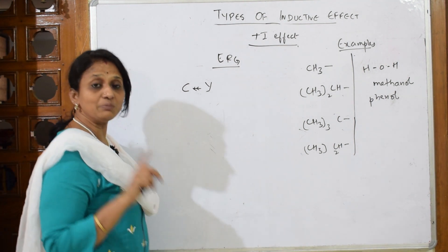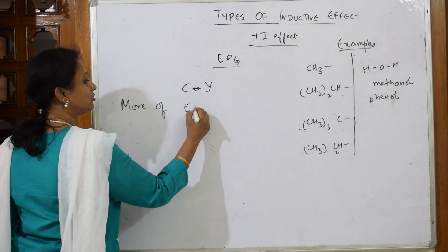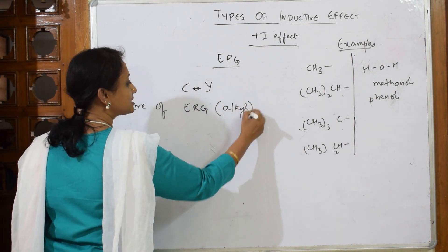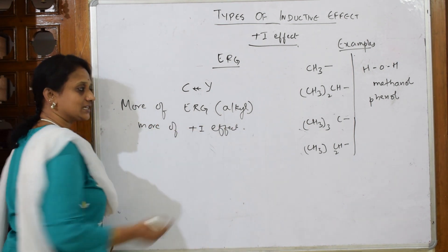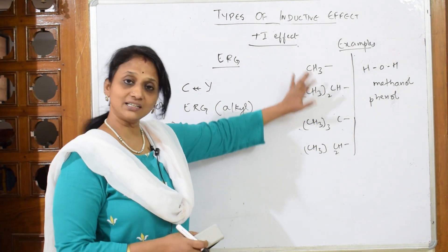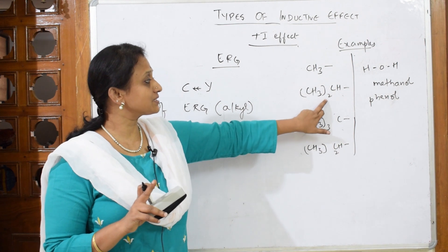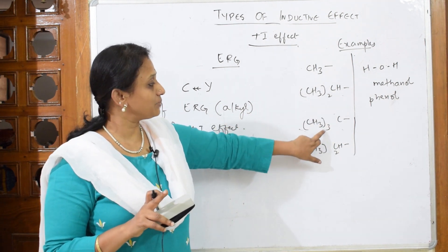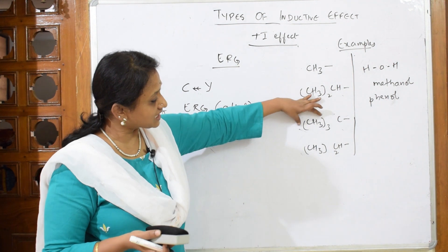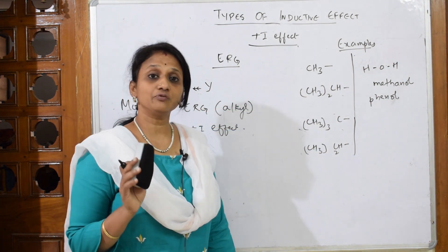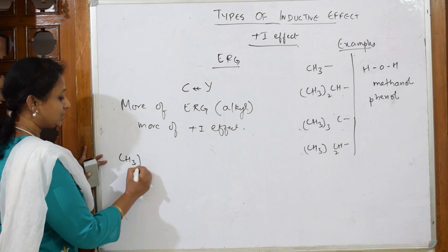More electron releasing groups means more +I effect. Remember: more alkyl groups means more +I effect. Let's take examples — these are all alkyl groups. Here one alkyl group (methyl group) is present; here two are present; here three plus one makes four; here two are present. The maximum number of alkyl groups is four, so that one has the most +I effect.